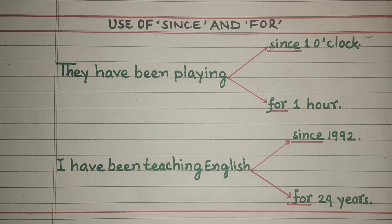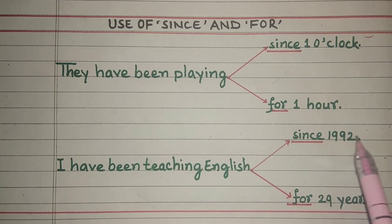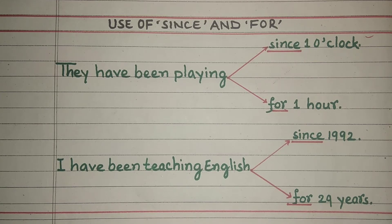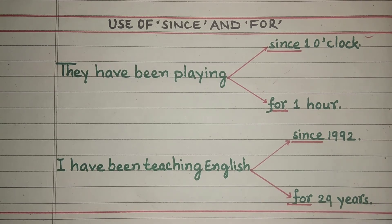Let's understand with other examples. If you want to say 'I have been teaching English since 1992' — I have been teaching English since 1992. But if you want to say 'Main 29 saal se English padhaata raha hoon' — I have been teaching English for 29 years.